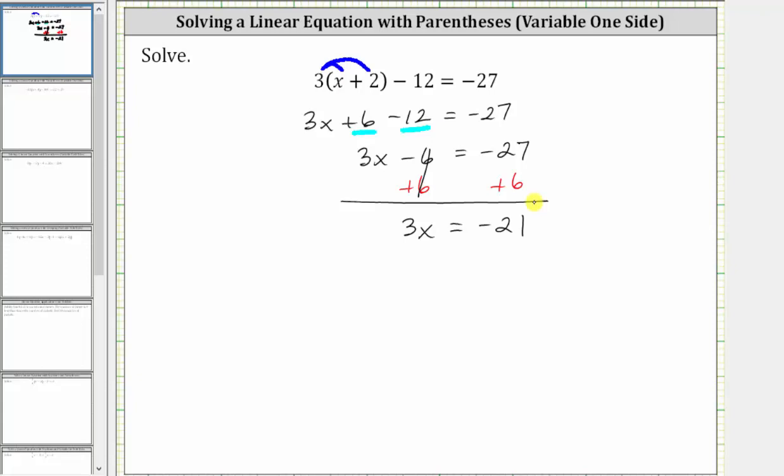The last step is to multiply or divide to solve for x. Since three x means three times x, to undo the multiplication and solve for x, we divide both sides by three. Simplifying, three divided by three simplifies to one. One times x is x. X is equal to negative 21 divided by three, which is equal to negative seven.